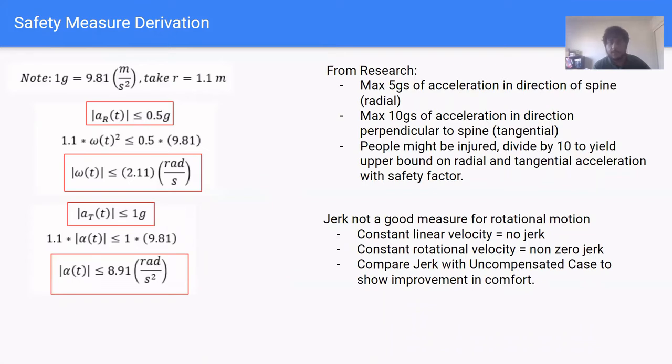From our research, we found that the human spine can endure a maximum of 5 G's of acceleration in the direction parallel to the spine and 10 G's of acceleration in the direction perpendicular to the spine. People who might use a stretcher may be injured, so we divide the two values discussed before by 10 to yield an upper bound on radial and tangential acceleration with a high safety factor. So this results in an upper bound on radial acceleration of 0.5 G, which then in turn results in an upper bound on angular velocity to be 2.11 radians per second. Then this also results in a bound on tangential acceleration of 1 G, and then this results in an upper bound on angular acceleration of 8.91 radians per second squared.